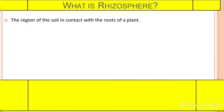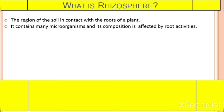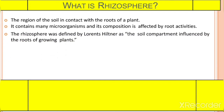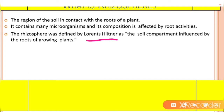Let's see the introduction. The Rhizosphere is the region of the soil in contact with the roots of a plant — the region present between the plant roots and the soil. It contains many microorganisms and its composition is affected by root activities. The Rhizosphere was first defined by scientist Lorenz Hiltner as a soil compartment influenced by the roots of growing plants.